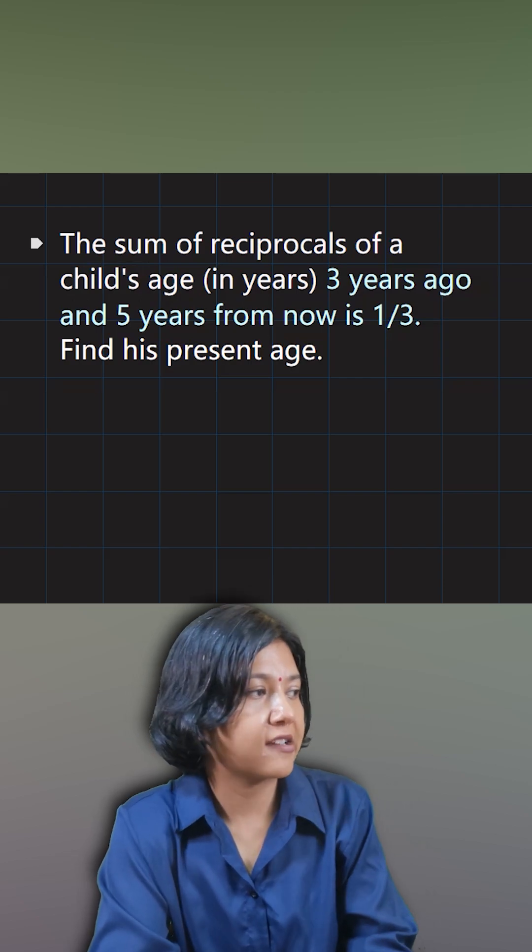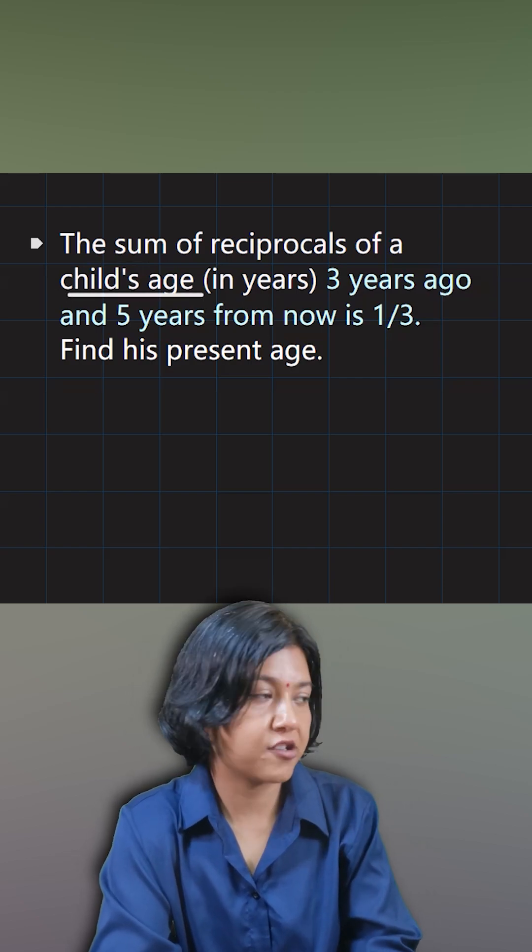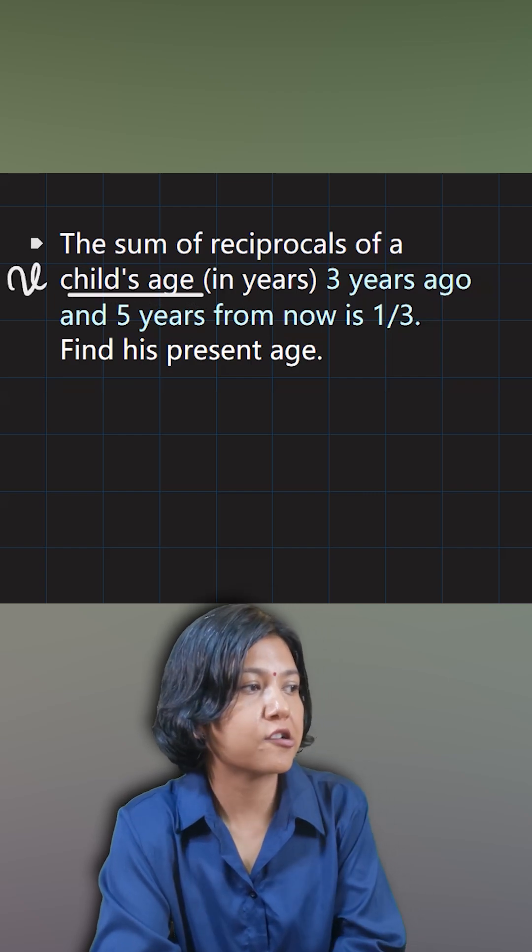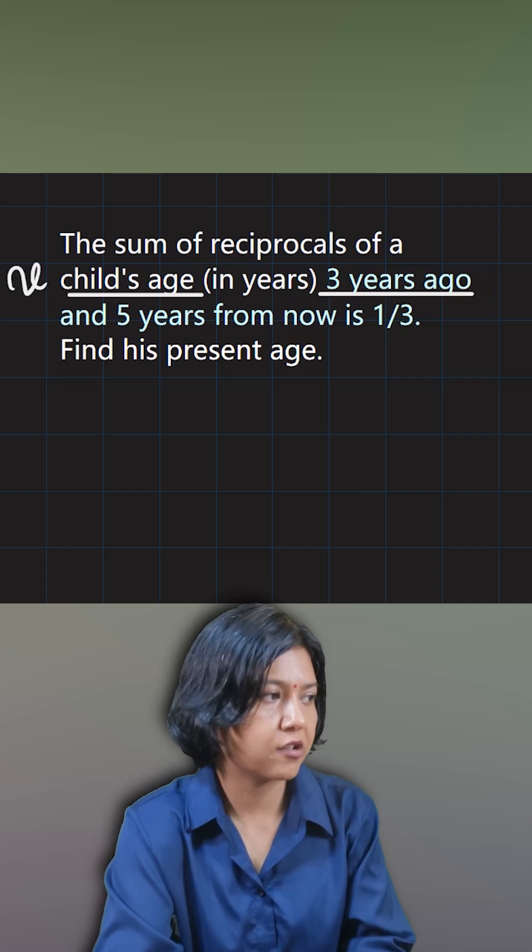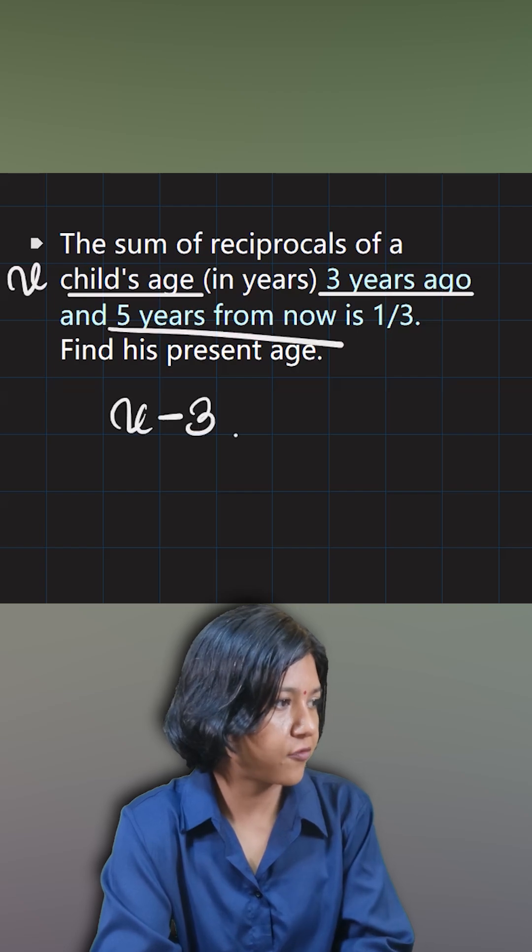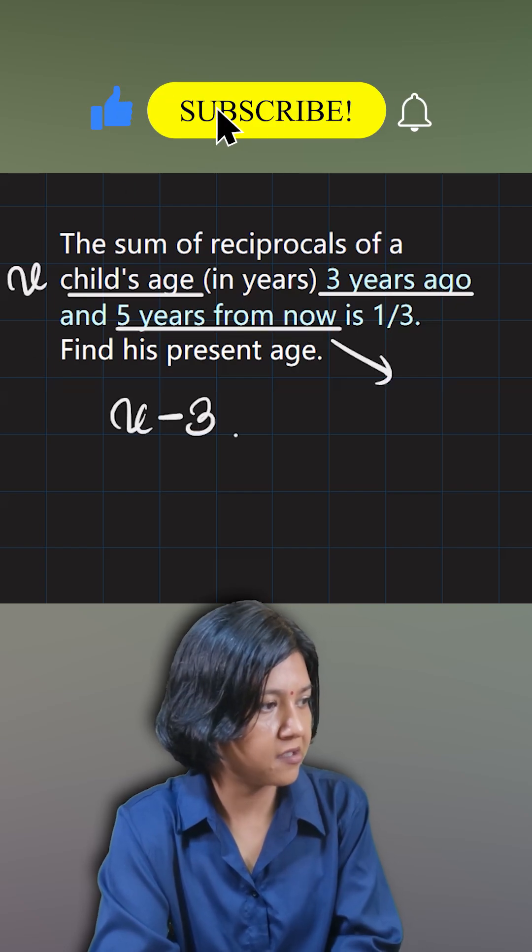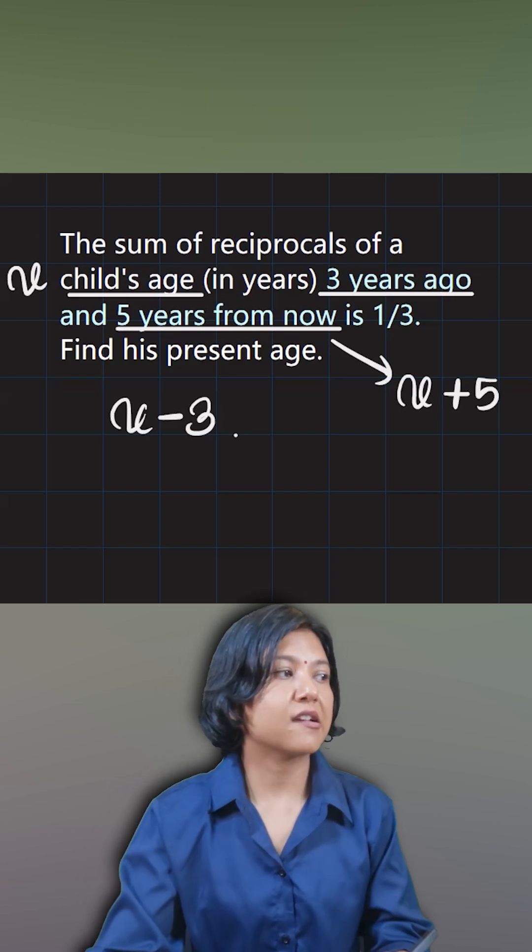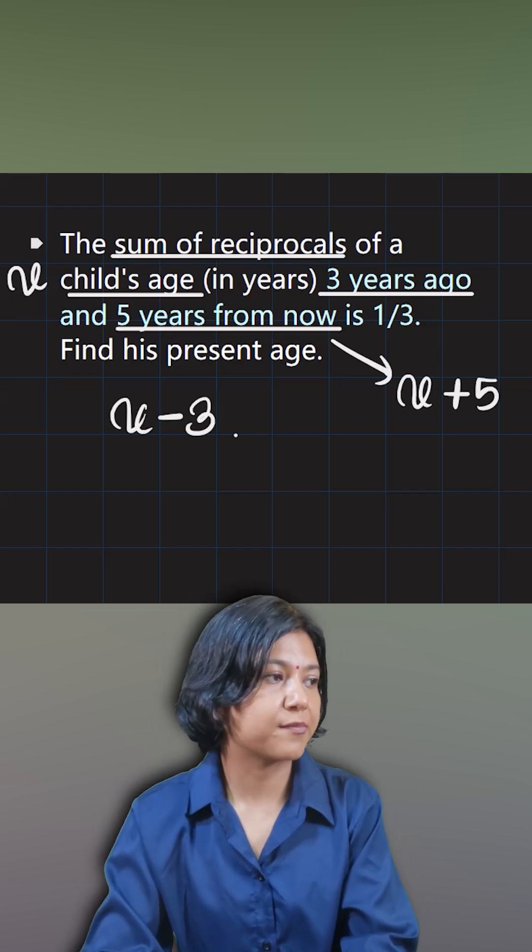The sum of reciprocals of a child's age. Because the child's age is missing, I'm going to say that this is x. If this is x, then three years ago, imagine your own age three years ago, so three years ago will be x minus three. And five years from now, what does that mean? Your present age is x, so five years from now will be simply x plus five.